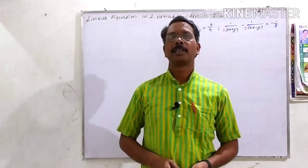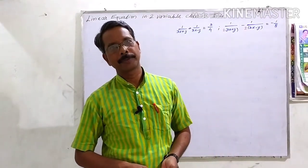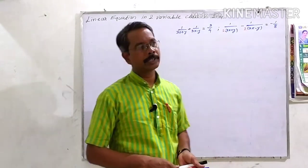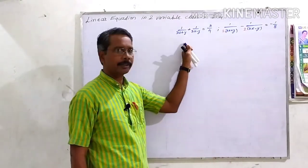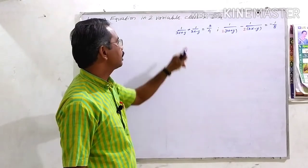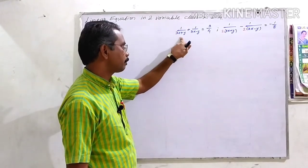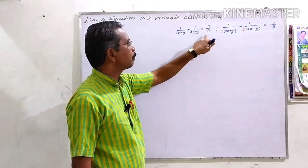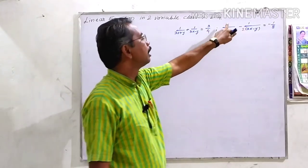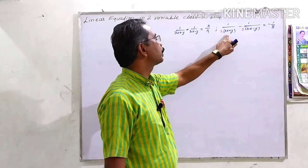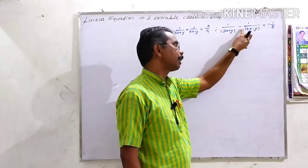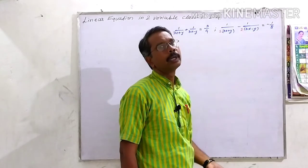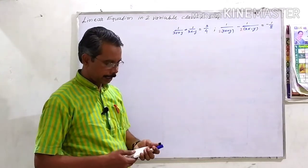Good evening and namaskar. Today we are going to solve linear equations in two variables, a special type of equation already written on the board. Our equation is 1 upon (3x plus y) plus 1 upon (3x minus y) equal to 3 upon 4, and the second is 1 upon 2(3x plus y) minus 1 upon 2(3x minus y) equal to minus 1 upon 8.